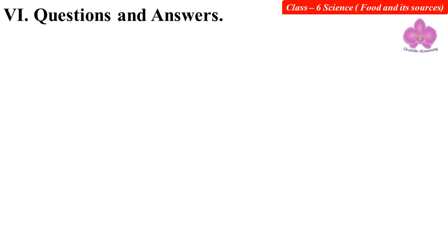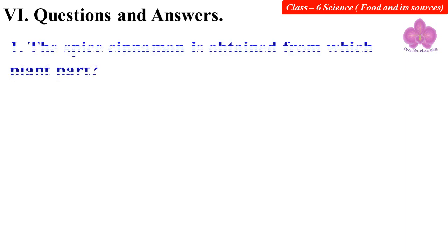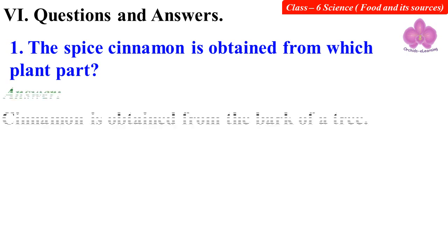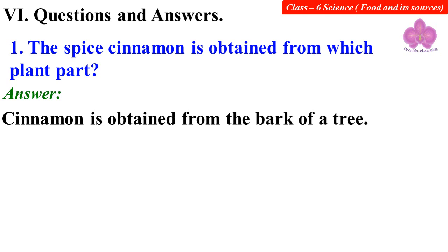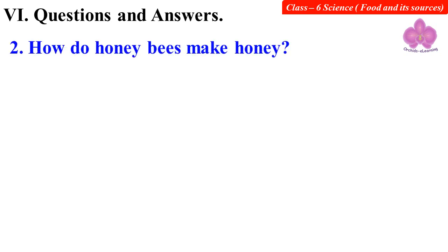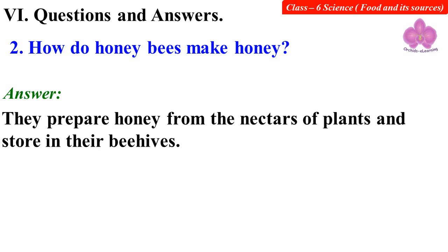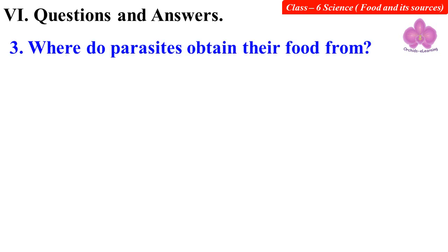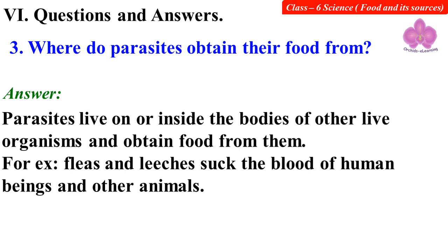Questions and answers. First question: The spice cinnamon is obtained from which plant part? Cinnamon is obtained from the bark of a tree. How do honeybees make honey? They prepare honey from the nectar of plants and store it in their beehives. Where do parasites obtain their food from? Parasites live on or inside the bodies of other live organisms and obtain food from them. For example, fleas and leeches suck the blood of human beings and other animals.